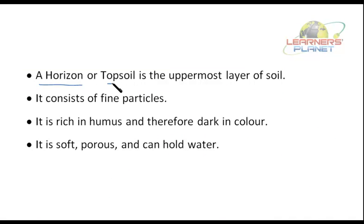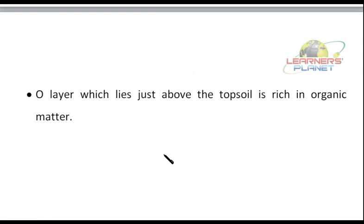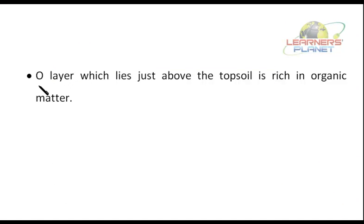A horizon, or topsoil — A horizon is also known as the topsoil, which is the uppermost layer of soil. It consists of fine particles and is rich in humus, therefore very dark in color. It is soft, porous and can hold water. The O layer is the organic matter — the name 'O' comes from organic matter, its initial. It lies just above the topsoil and is rich in organic matter.